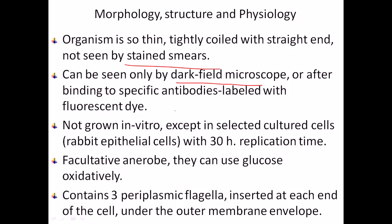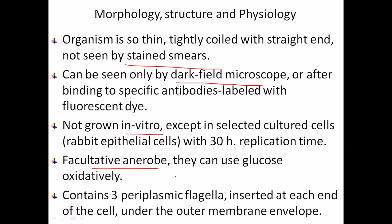An important feature of Treponema is that it cannot be grown in vitro conditions — we need to provide an original cellular environment such as rabbit epithelial cells. They need a large replication or incubation time of about 30 hours or more to grow and reproduce. Most of them are facultative anaerobes, meaning they do not require oxygen for growth. If oxygen is present, they can use glucose via an oxidative manner. They have three periplasmic flagella inserted at each end of the cell, under the outer membrane envelope.